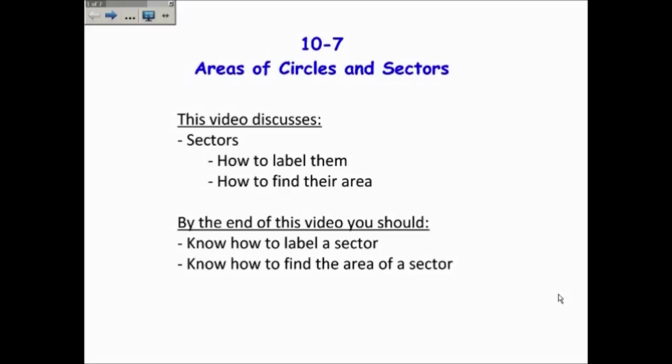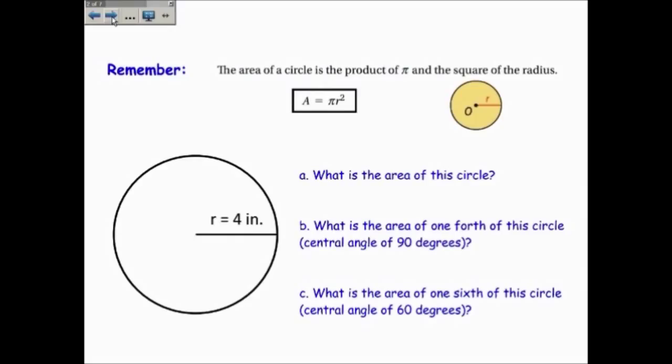By the end of this video you should be able to know how to label a sector and also find the area of a sector. Now remember that the area of a circle is the product of pi and the square of the radius. In other words, the area is pi r squared.